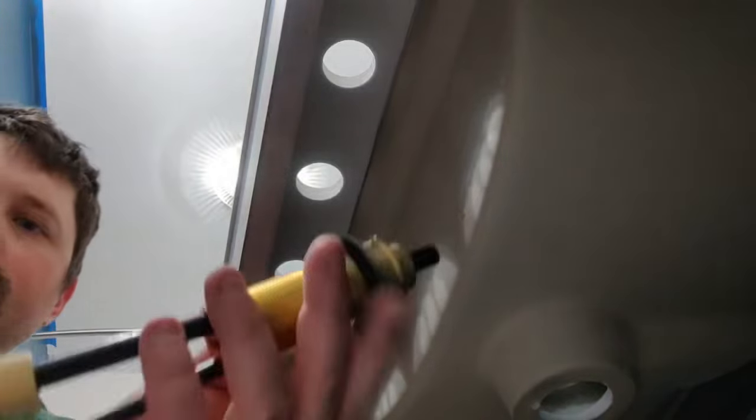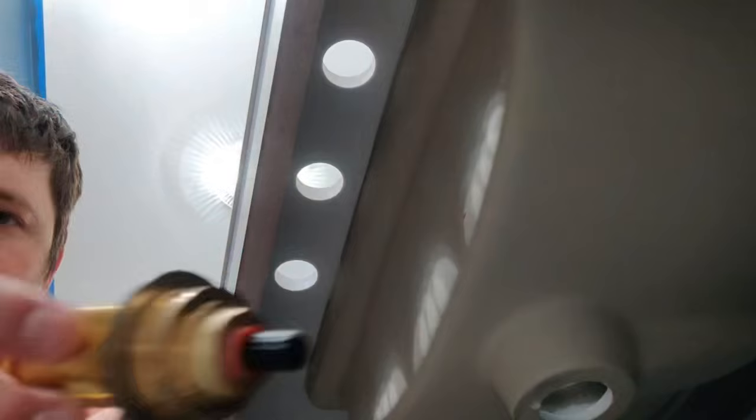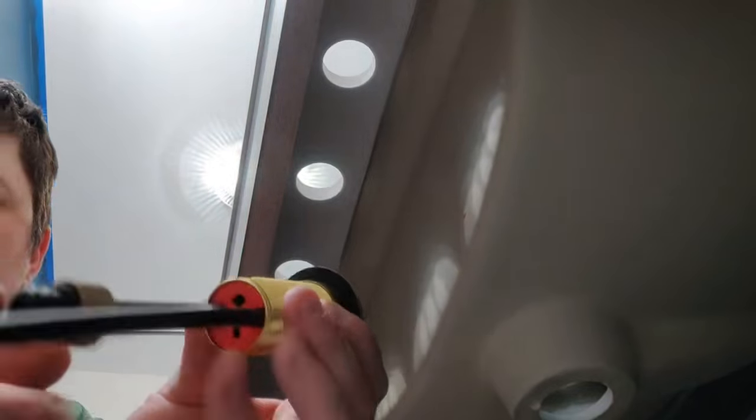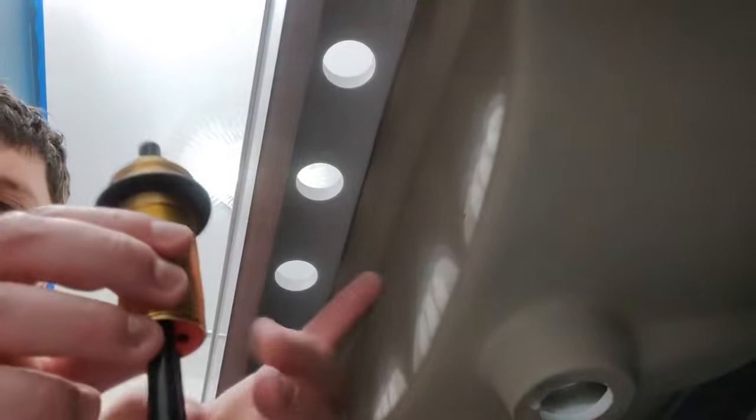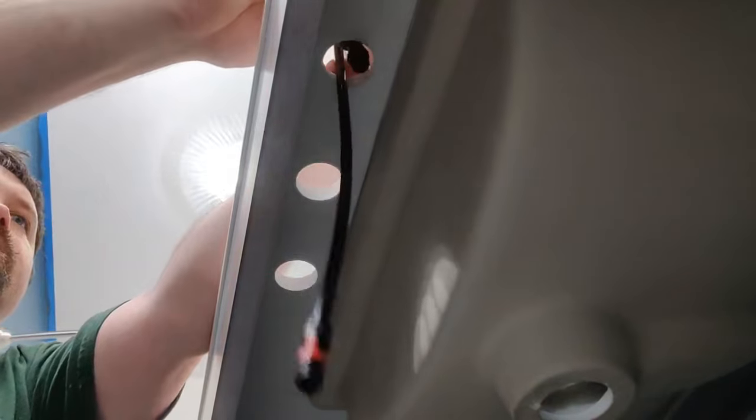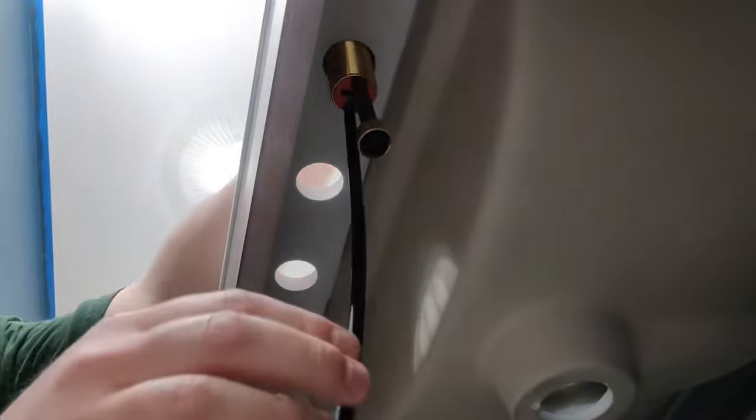Next we're going to take our hot and cold valves and insert them into the outer holes on the countertop. The other thing to note is that on the bottom of each valve is an arrow and that arrow needs to point towards the front edge of the counter. The cold is going to go on the right and the hot is going to go on the left.